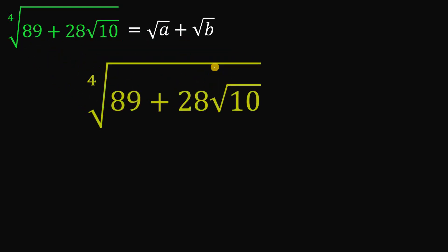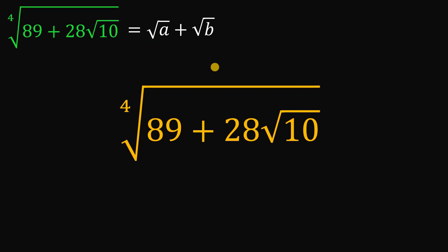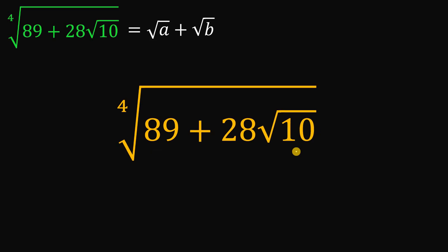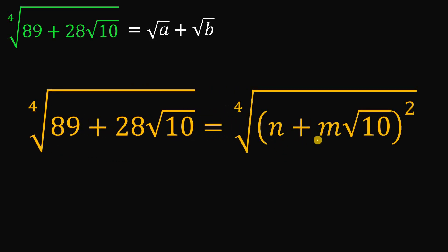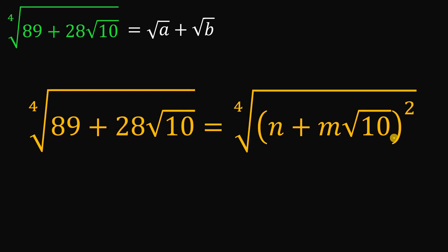One way to answer is like this: if we can rewrite the expression inside the fourth root in the form (n plus m times square root of 10) raised to the power of 2, we can simplify this because 2 is a multiple of 4. If we cancel out, we get just the square root of n plus m times square root of 10. That's the plan — we need to rewrite 89 plus 28 times square root of 10 in that form, squared.